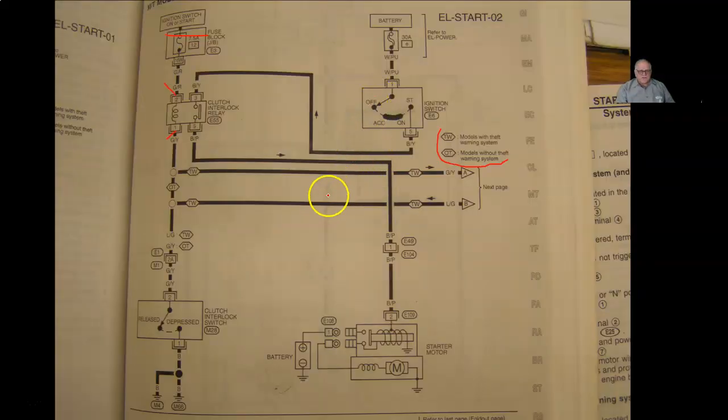We're going to pretend like this vehicle does not have the theft warning system, so that means there is no splice here. This green wire of the yellow stripe comes down, and you'll see that this says blue with the green. That's only going to be blue with the green if you have the theft option. If you don't, it's going to be green wire with the yellow stripe comes right to the clutch interlock switch.